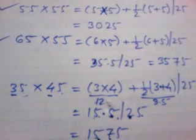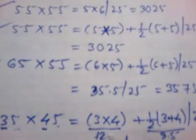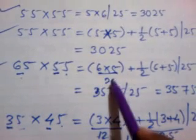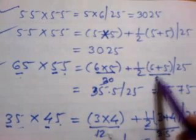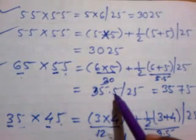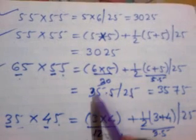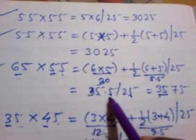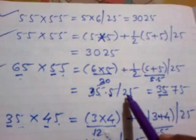Similarly, we can see some more examples, that is 65 into 55: 6 and 5 is 30, then half of the sum is 5.5. This is 35.5, and then the back is 125. This will give us the answer as 35, and the 5 will be shifted to the next second place, that is 75.